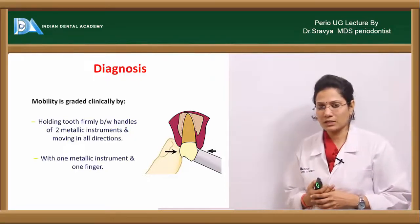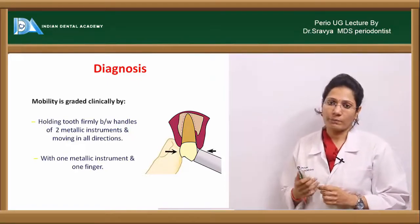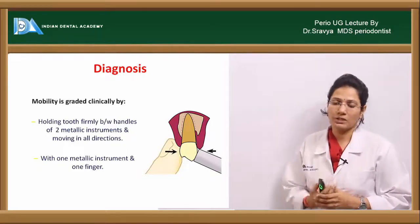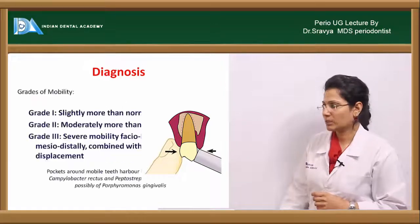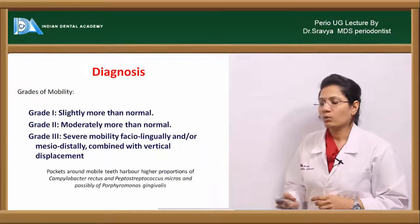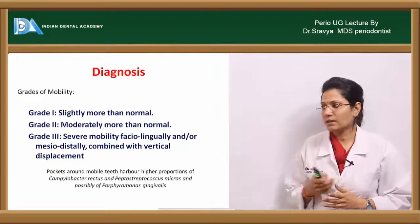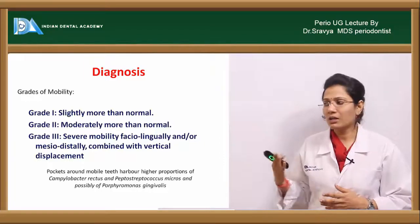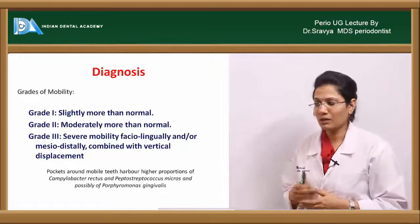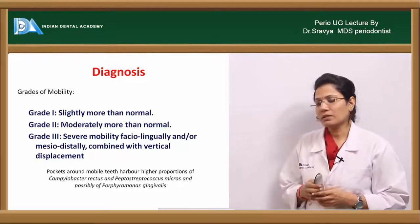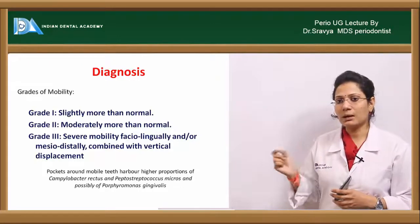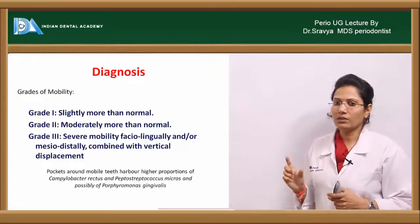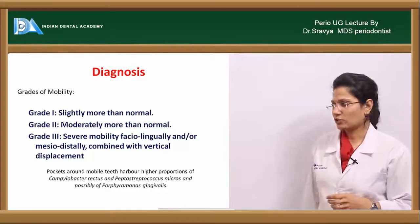Another method of detecting mobility is use of a periodontometer, also called a mobilometer, which is an advanced diagnostic aid. The grades of mobility are grade 1, grade 2, and grade 3. Grade 1 means slightly more than normal. Grade 2 is moderately more than normal. Grade 3 is severe mobility where movement is appreciable in a faciolingual direction and even in a vertical direction.